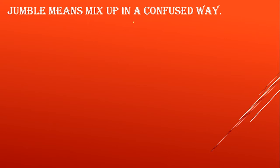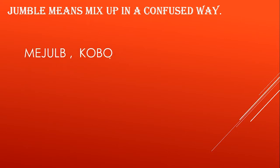Jumble means mix up in a confused way. Jumble ka matlab hota hai ki is tariqe se koi cheez mix ho ki saamne wala confused ho jaye ki aakhir ye hai kya. Aayye dho word dhekhte hai pahle. Yahaan par mein hai dho word likhe hai. Aur in dho words ke letters jo hai woh jumble letters hai. To jumble letters hume in dho words ke confuse kar rahe hai ki aakhir ye kya words ho sakti hai.